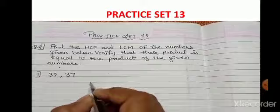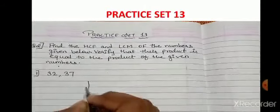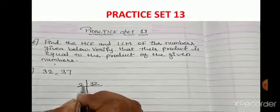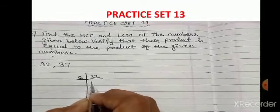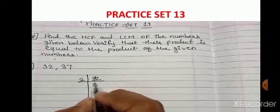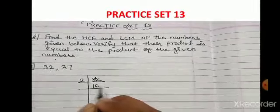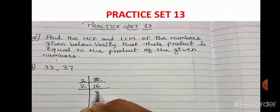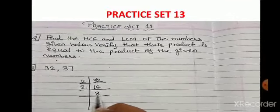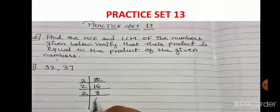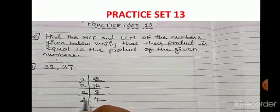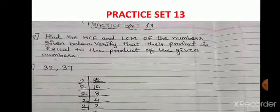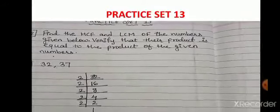First we will do the factorization. 32 is divisible by 2: 2 × 16. 16 is divisible by 2: 2 × 8. 8 is divisible by 2: 2 × 4. 4 is divisible by 2: 2 × 2. And 2 is divisible by itself: 2 × 1. So 32 = 2 × 2 × 2 × 2 × 2.